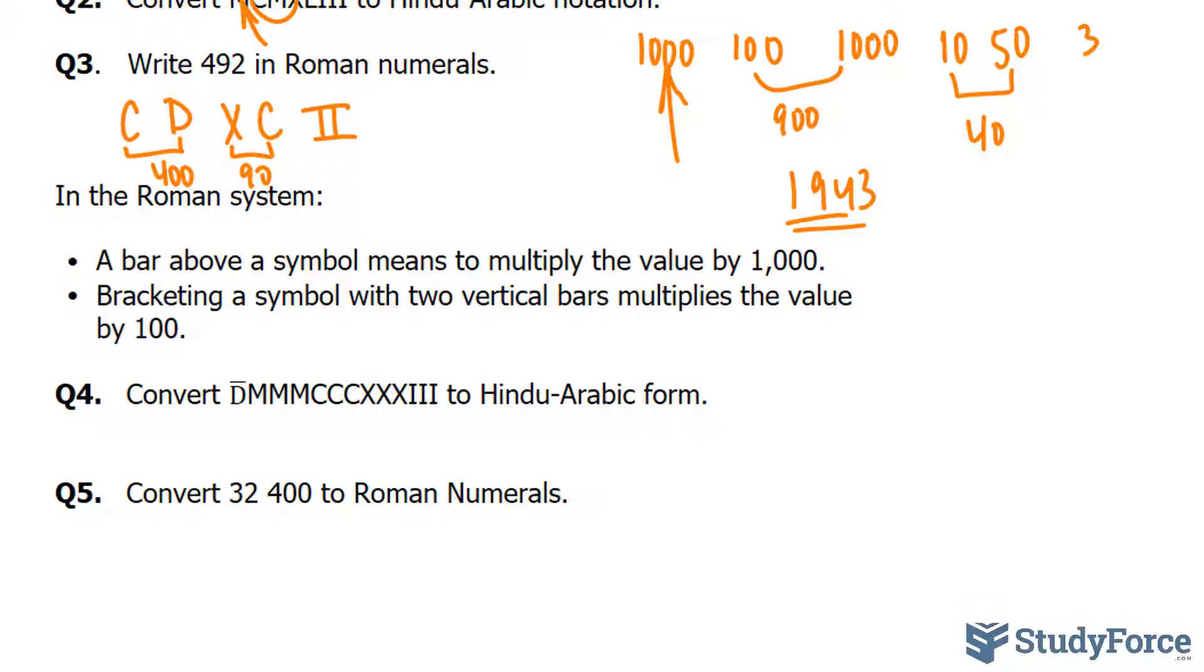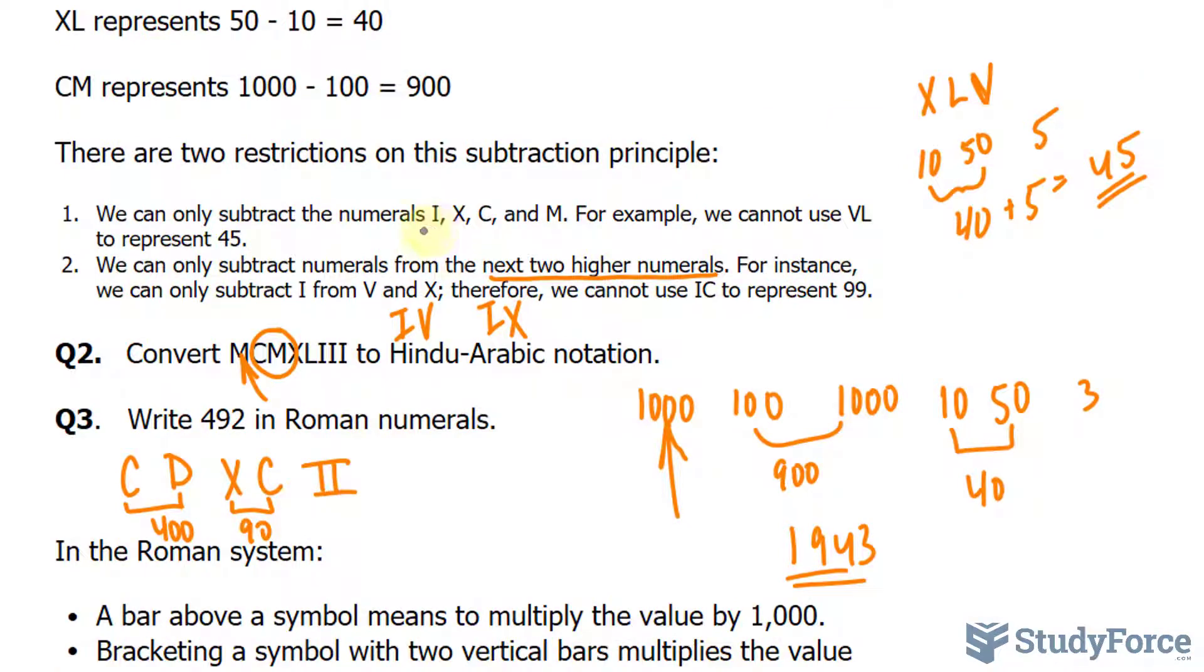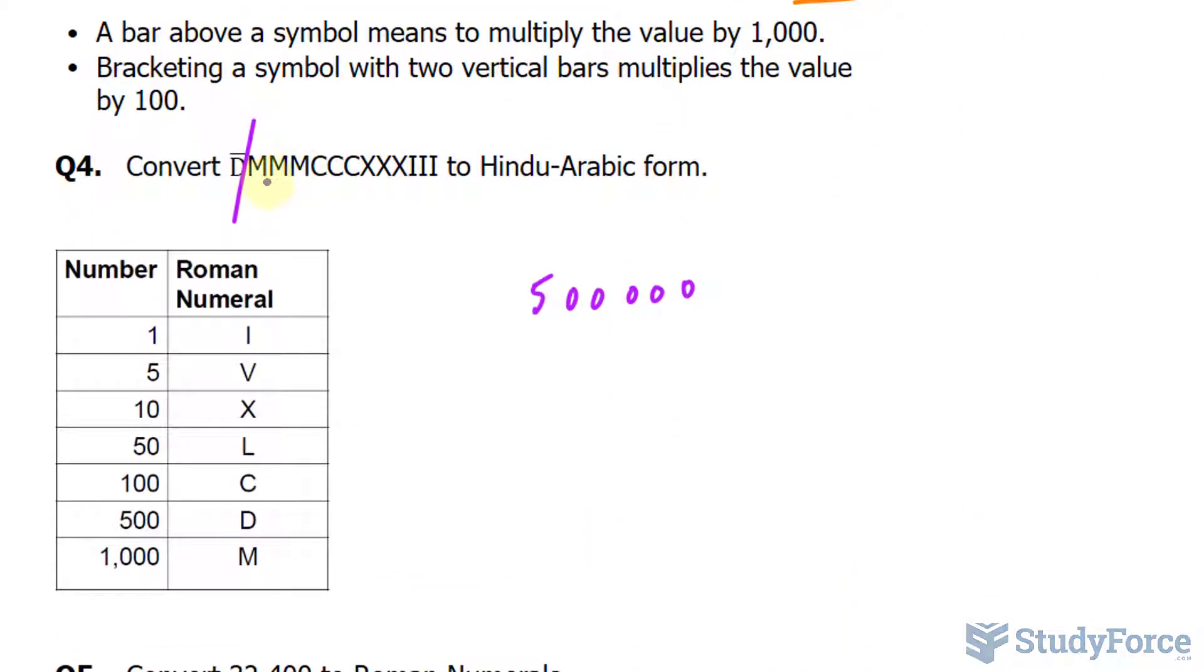So in question number 4, we have to convert the following to Hindu-Arabic form. Let's begin with this D bar. This D on its own represents 500. We need to multiply that by 1,000. If we multiply this by 1,000, we get 500,000. So that just takes care of this D. And it's followed by an M. The subtraction rule doesn't apply for D. It only applies for these letters. So the next one is M. We have three of those. M represents 1,000. So we have 3,000. Now we're here.